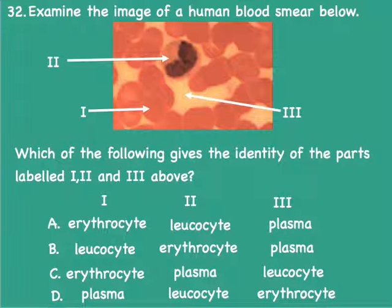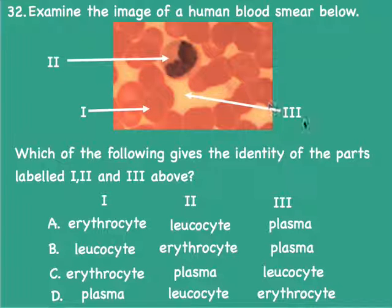Examine the image of a human blood smear below — which of the following gives the identity of the parts? Label 2 points to a leukocyte, a white blood cell. Label 1 to an erythrocyte, or red blood cell, and label 3 to the plasma. Therefore the answer is A.